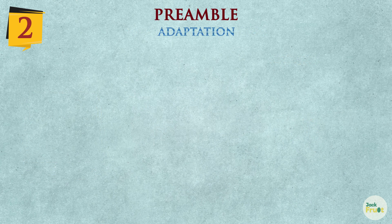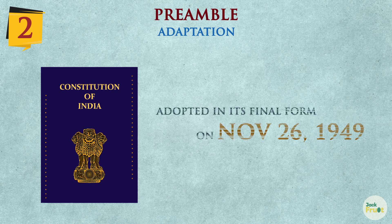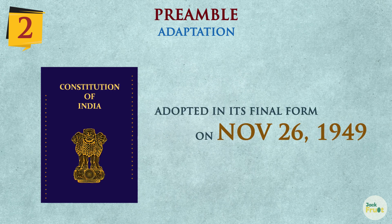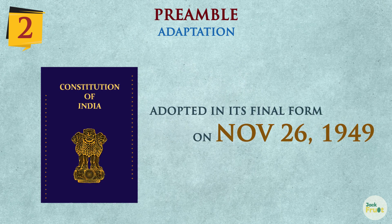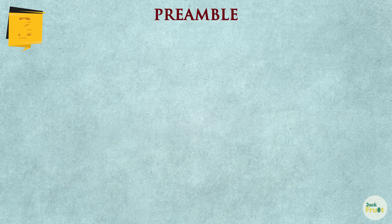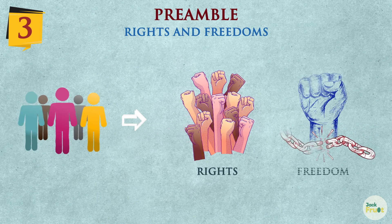2. It says that the Constitution was adopted in its final form on November 26, 1949. 3. It sets out the rights and freedoms which the people of India wished to secure for themselves.